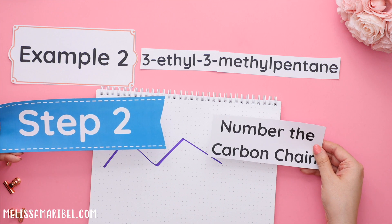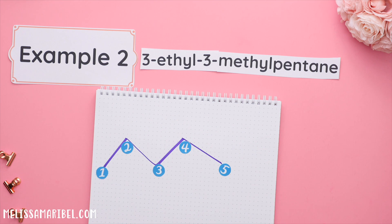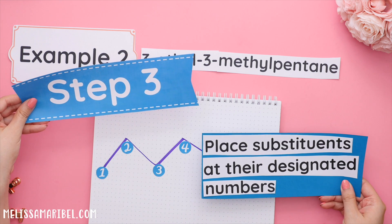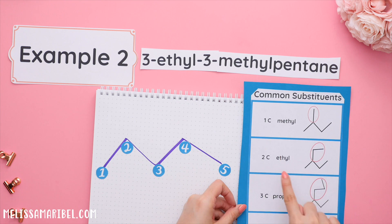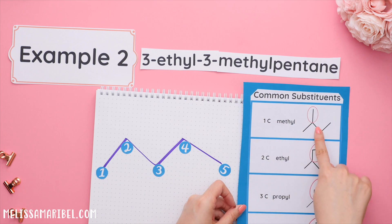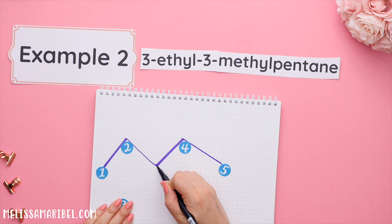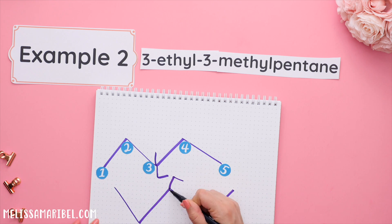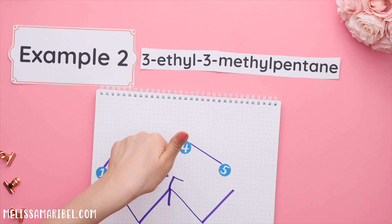Step two: number the carbon chain. I'll number the carbon chain from left to right, but you could have numbered it from right to left. Step three: place substituents at their designated numbers. We have two different substituents in this case — an ethyl group and a methyl group. Both groups are located at the third carbon. We could have also drawn the major carbon chain going up first and placed the same substituents. Either way, both examples have the substituents at carbon three, so they both are correct.